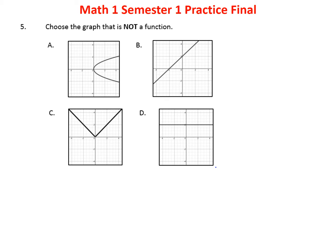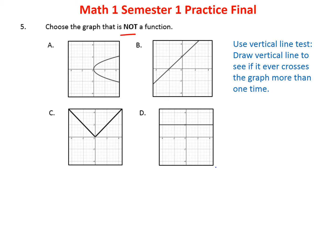Problem five asks us to choose the graph that is not a function. For a function, for every x there's only one y. When you have a graph, we use the vertical line test — draw a vertical line to see if it crosses the graph more than once. Graph A crosses it twice, so we immediately know that is not a function. The other graphs each cross the vertical line only one time, confirming they are functions.